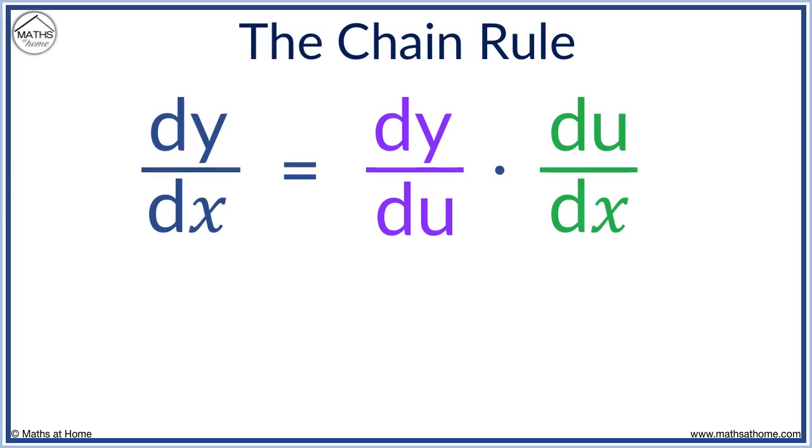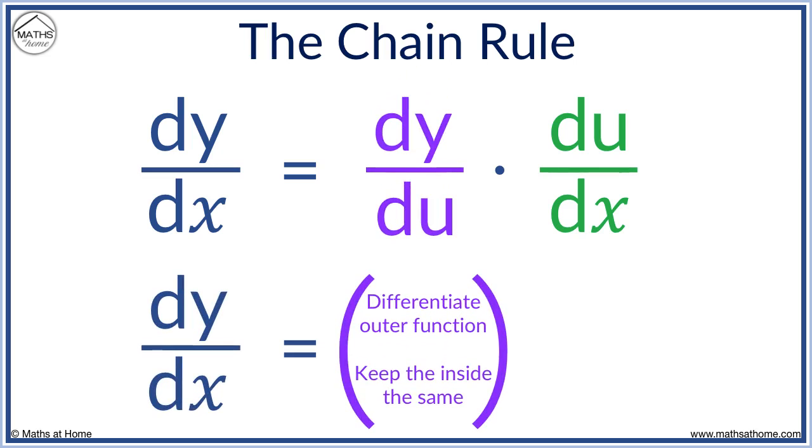The chain rule states that dy dx equals dy du times du dx. In words, we differentiate the outer function while keeping the inner function the same. We multiply this by the derivative of the inner function.